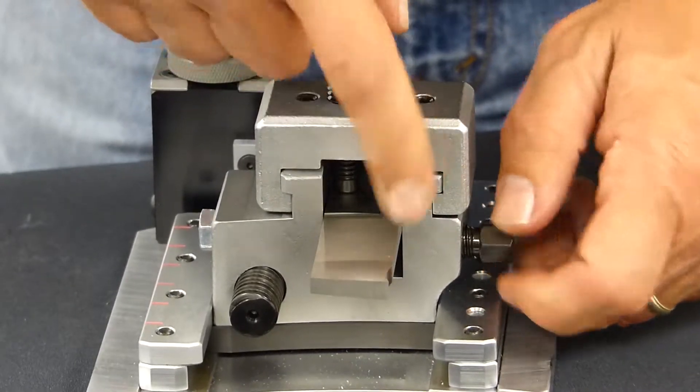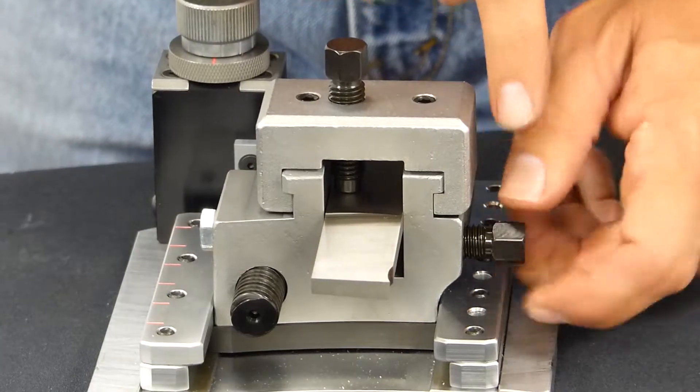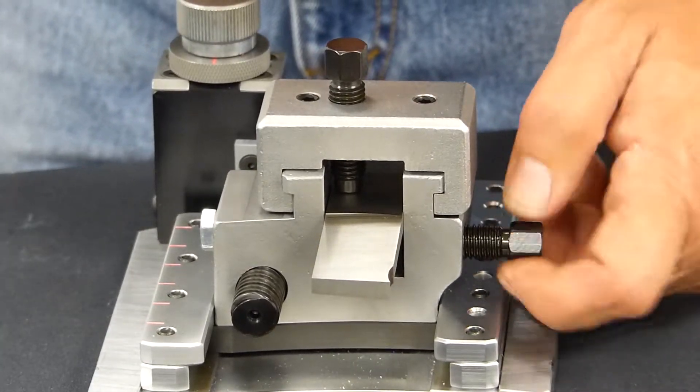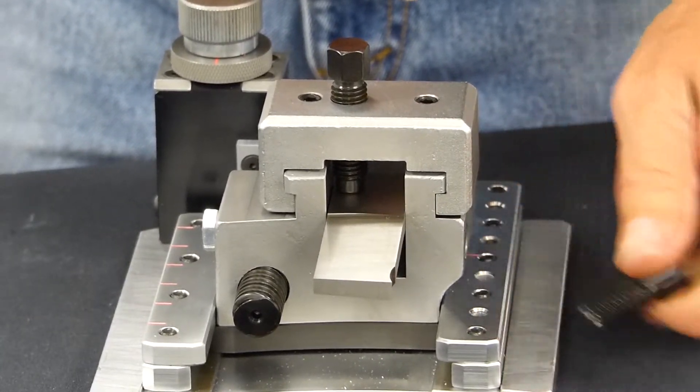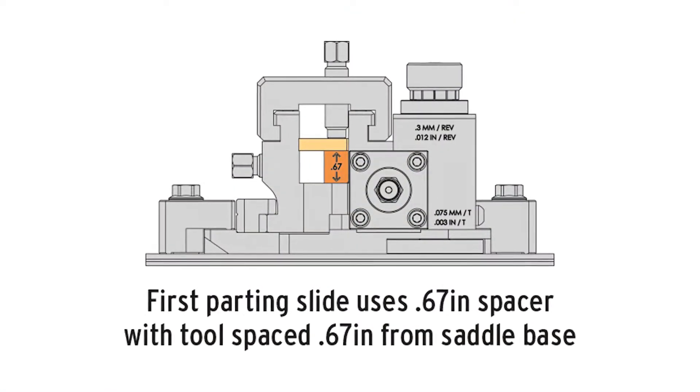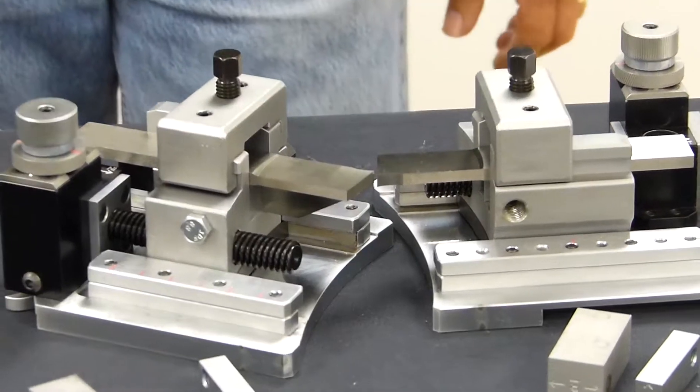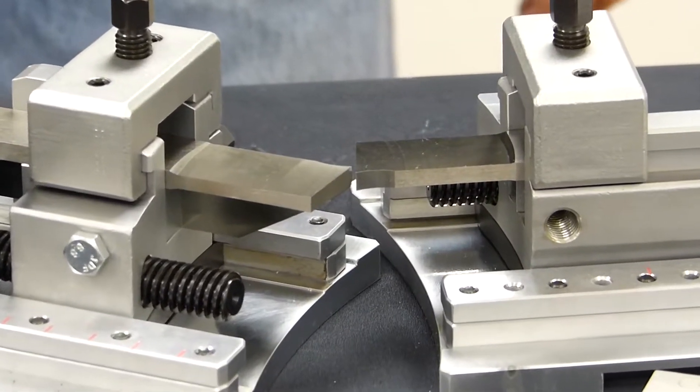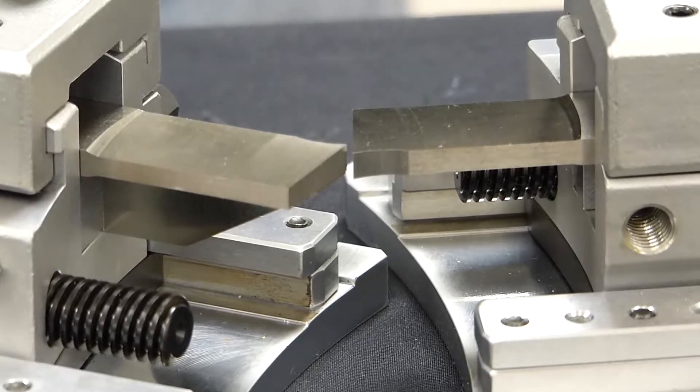Always make sure to put the locking screw over the support. In this case, we'll want to remove this screw so it doesn't vibrate loose on us. There's the proper setup for a double part and inside bevel using legacy tooling.